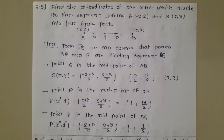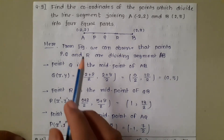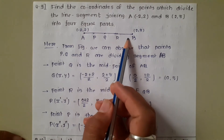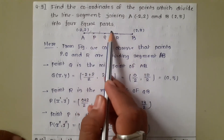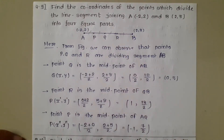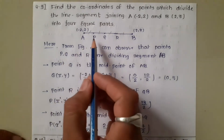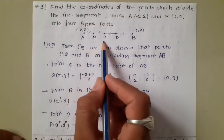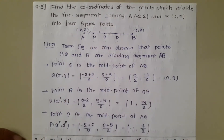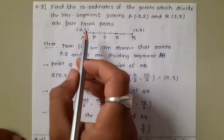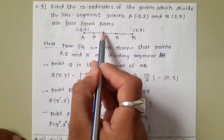From the figure, line segment AB is divided into 4 equal parts with 3 points P, Q, and R. We can see 1, 2, 3, 4 equal sections clearly.